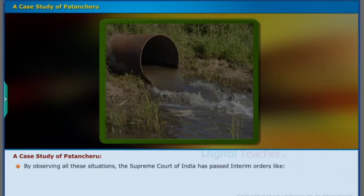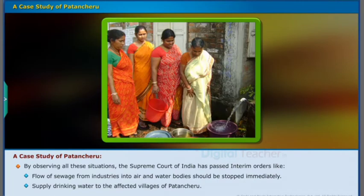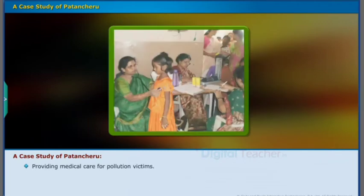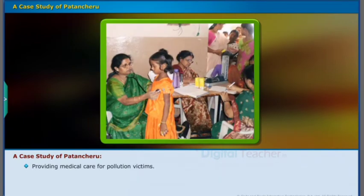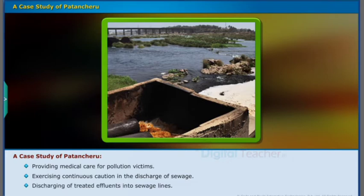By observing all these situations, the Supreme Court of India has passed interim orders: the flow of sewage from industries into air and water bodies should be stopped immediately; supply of drinking water to the affected villages of Patancheru; rectification of the CETP; providing medical care for pollution victims; exercising continuous caution in the discharge of sewage; and discharging of treated effluents into sewage lines.